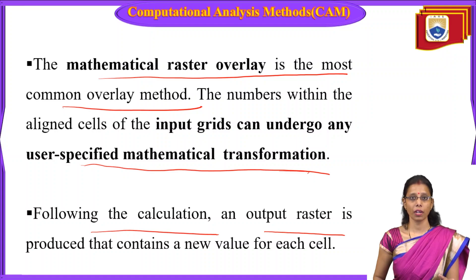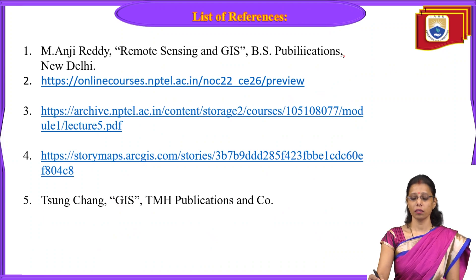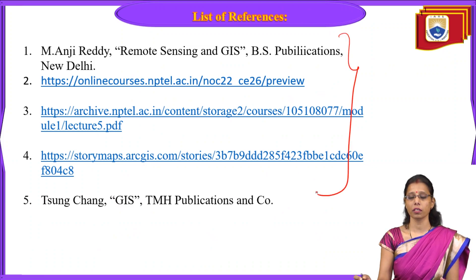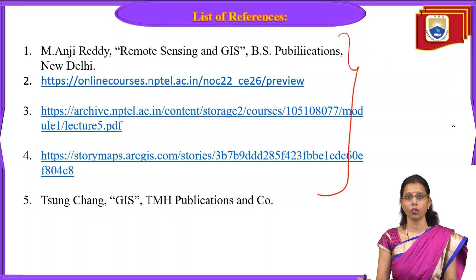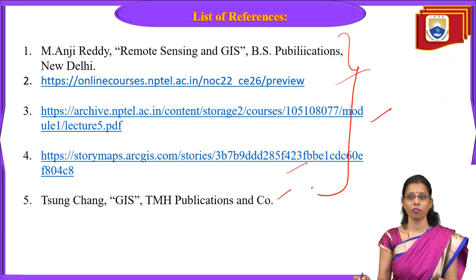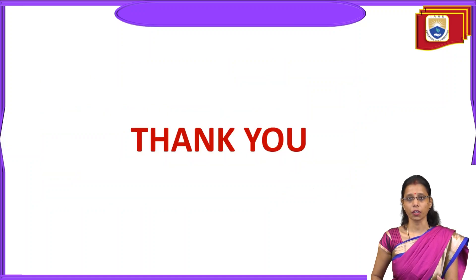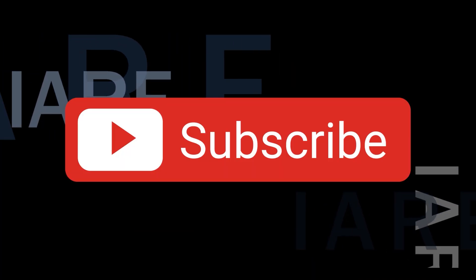We generally call this CAM. In the previous lecture we discussed WAM — visual analysis method. WAM and CAM are very common in GIS, and all analysis processes can be done on this data. These are the references for more information — you can refer to the MNG Ready book or follow the provided links. That's all for today. Thank you — like, share, and subscribe, and hit the bell icon for more updates.